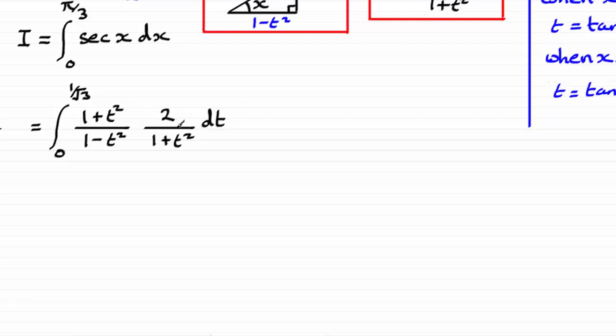So it's just a question now of trying to evaluate this integral in terms of t and then substituting our new limits in. Well, what I can see here is that the 1 plus t squared cancels out with the 1 plus t squared here, leaving me with 2 over 1 minus t squared.